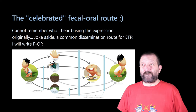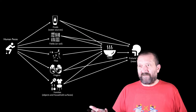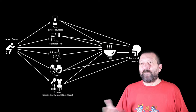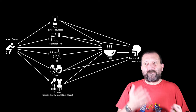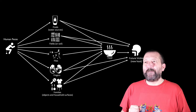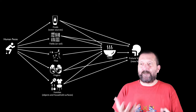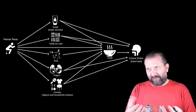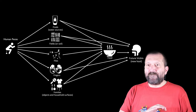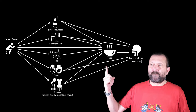Human feces can go through a variety of mediums — it can contaminate water sources, fields, soil, it can be carried by flies, by improper hand washing, and it can go on fomites. Those contaminations either go directly to a new host or they go through food into the new host. That is one very common mechanism of transmission.